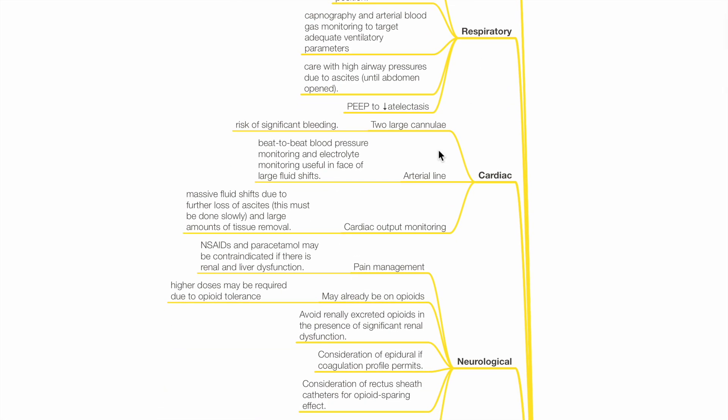C for cardiac. Ensure two large IV cannulae present for resuscitation of significant bleeding. Arterial line for beat-to-beat blood pressure monitoring and arterial blood gas and electrolyte monitoring, useful in the face of large fluid shifts. Cardiac output monitoring guides fluid management due to massive fluid shifts from loss of ascites and tissue removal.